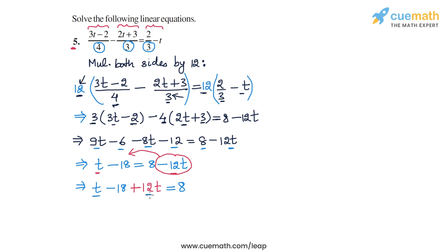Now t plus 12t is 13t, so we will have 13t minus 18 is equal to 8, and now the next step should be to take this minus 18 and transpose it to the right-hand side. So this time we will get 13t is equal to 8 plus 18. The transposed term minus 18 will become plus 18 on the RHS.